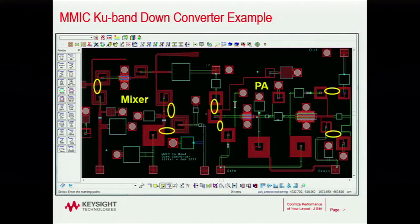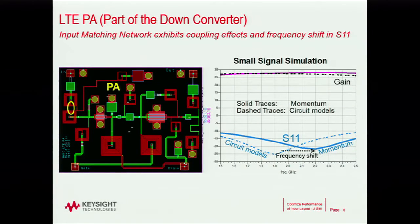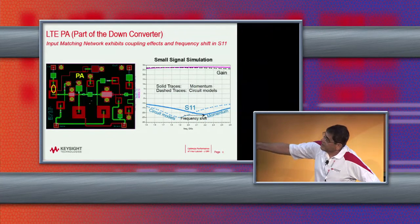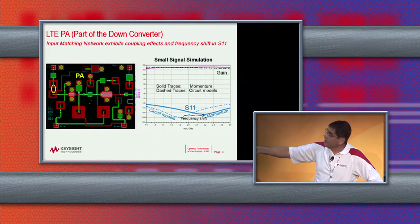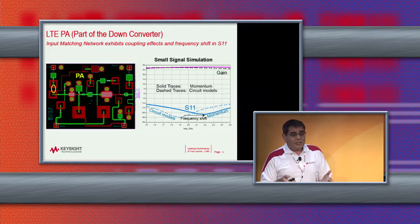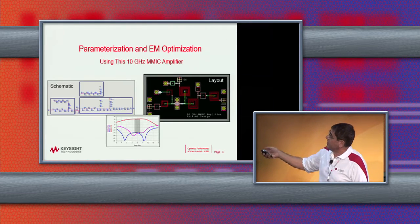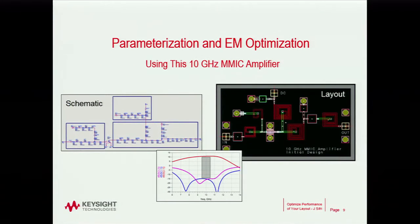I took that PA and looked at the input — there are two vertical spirals at the PA input. I did EM simulation and notice how the S11 return loss shifted in frequency due to that coupling effect and the vertical structure orientation. This now takes me to the meat of the presentation: going back to that initial MMIC PA and showing how I parameterize and EM optimize it — which is what you want to do before going into fabrication.